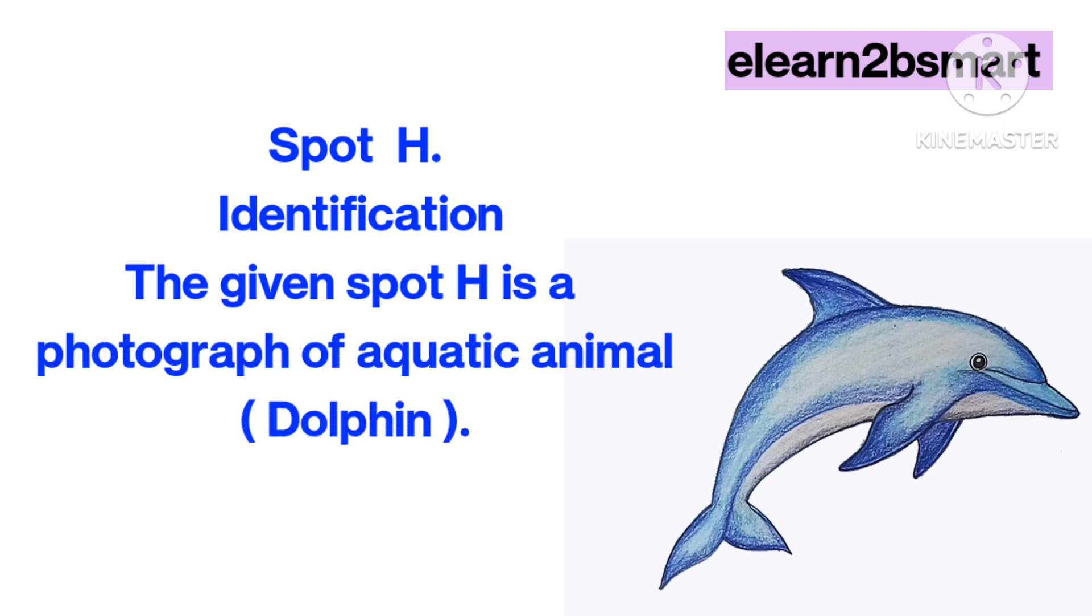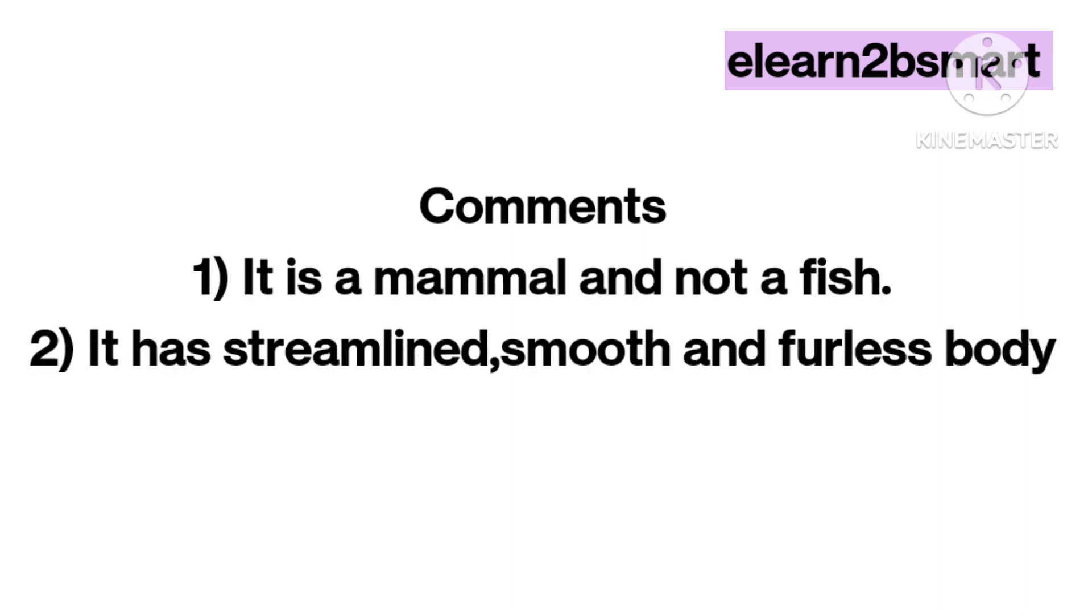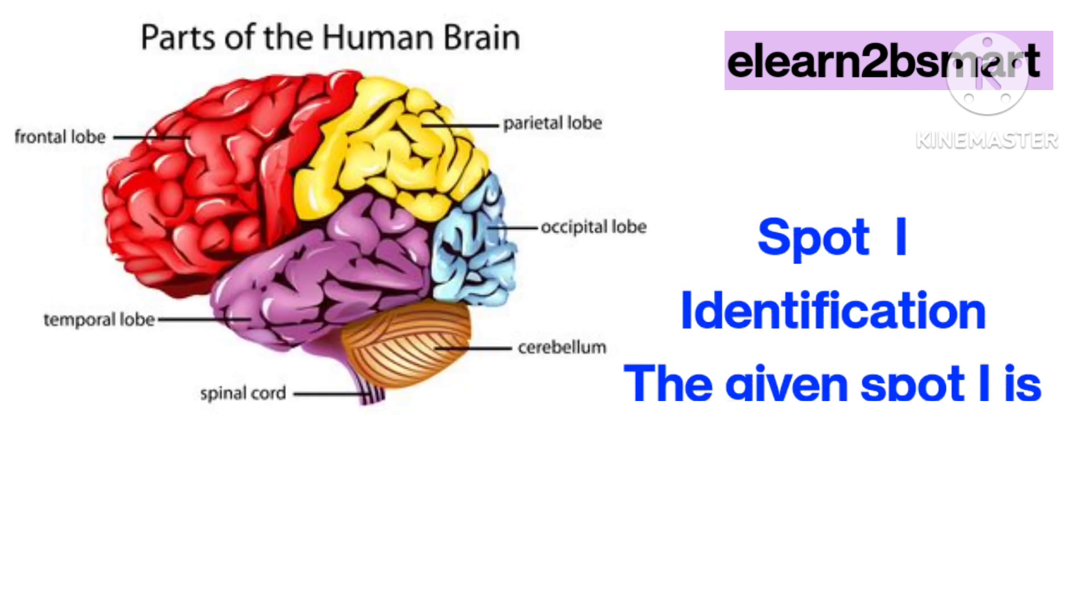Spot H identification: The given spot H is a photograph of aquatic animal dolphin. Comments: 1. It is a mammal and not a fish. 2. It has a streamlined, smooth, and furless body to reduce friction.